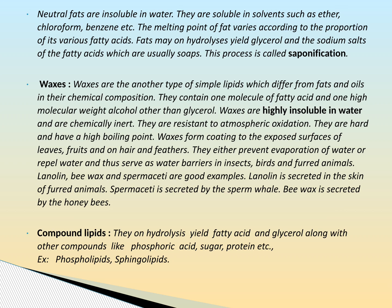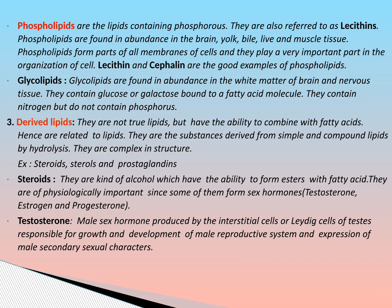Compound lipids on hydrolysis yield fatty acids and glycerol along with other compounds like phosphoric acid, sugar, protein, etc. Examples of compound lipids are phospholipids and sphingolipids. Phospholipids are lipids containing phosphorus, also referred to as lecithins. They are found in abundance in the brain, egg yolk, bile, liver and muscle cell tissue. Phospholipids form parts of all cell membranes and play a very important part in the organization of the cell. Lecithin and cephalin are good examples of phospholipids.